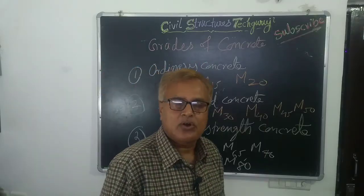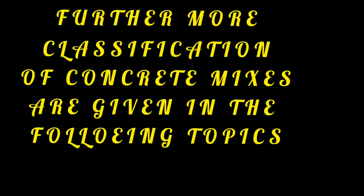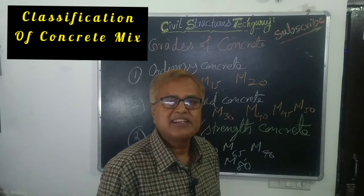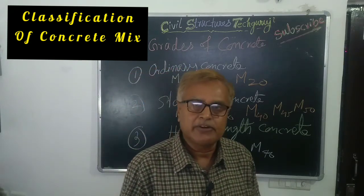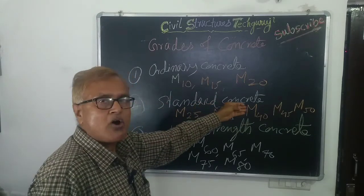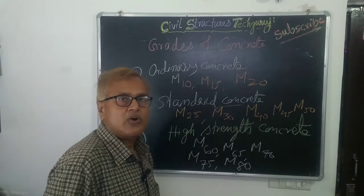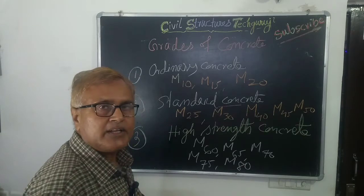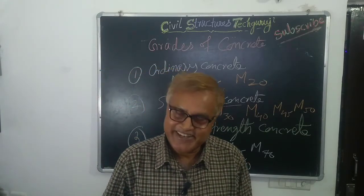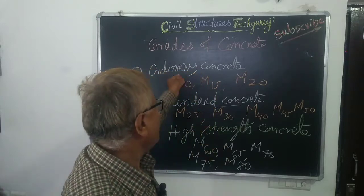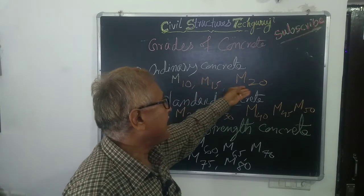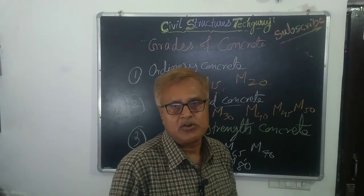Four important items of work: concrete grade as per IS code and CPWD specification. There are three categories of concrete: ordinary concrete, standard concrete, and high strength concrete, as given in the IS code and CPWD specification. Ordinary concrete includes M10, M15, and M20.